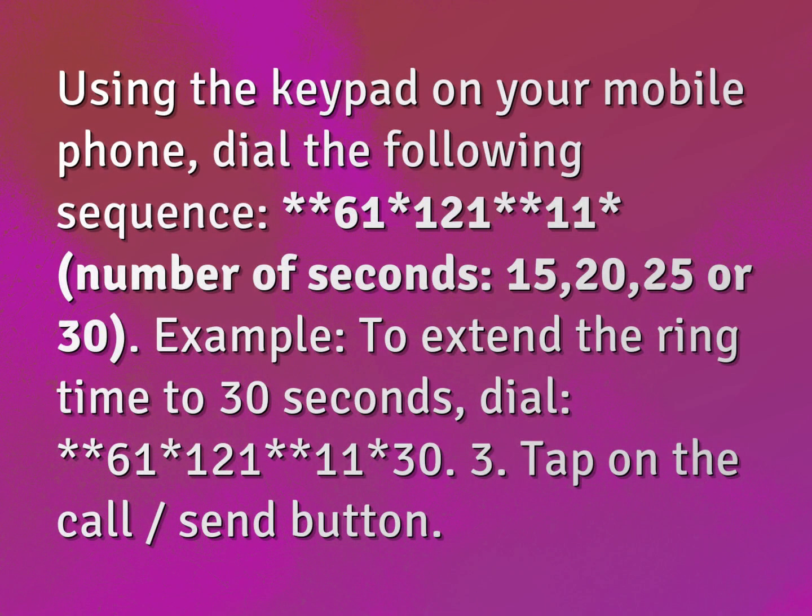Using the keypad on your mobile phone, dial the following sequence: asterisk, asterisk, 61, asterisk, 121, asterisk, 11, asterisk, then the number of seconds — 15, 20, 25, or 30.